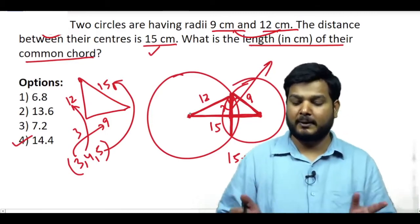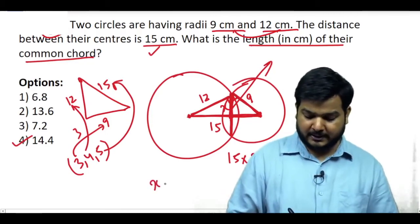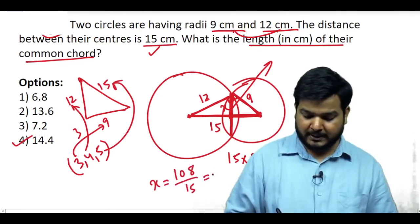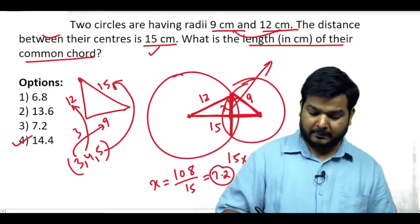Here you can see how much x will come. 108 by 15 which is 7.2. But the chord, don't take 7.2 in the exam, don't do that.